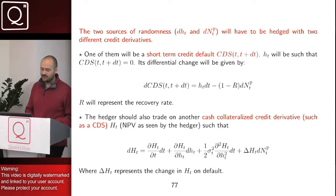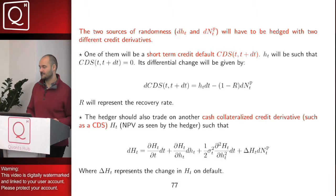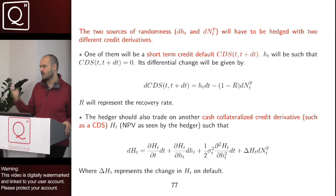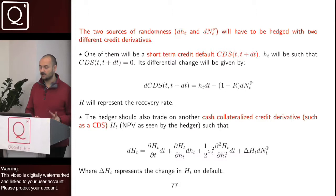In a one-factor world, in the interest rate world, we only have one source of randomness. In the credit world, in a one-factor world, we have two sources of randomness. In order to be hedged, we need to trade on two different credit derivatives.